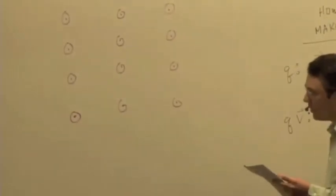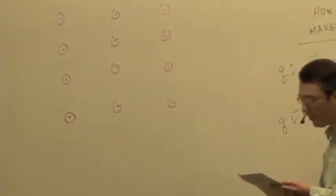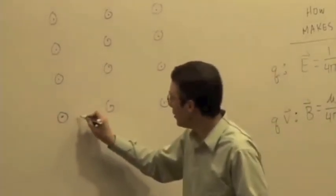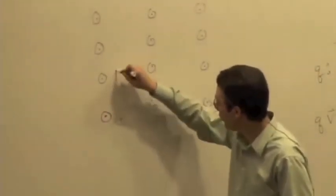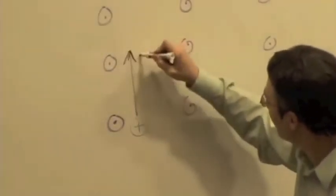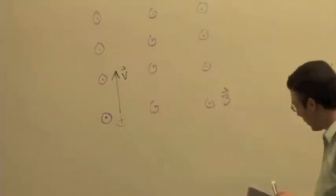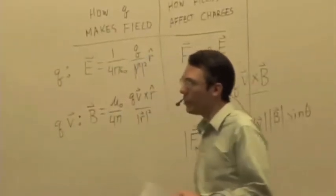I'm going to shoot a proton into this uniform magnetic field. So I have a proton that is originally a positive charge moving upward — that's the velocity. So what's the direction of the magnetic force on the proton?